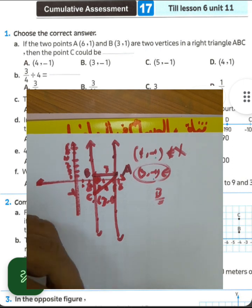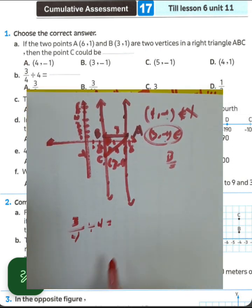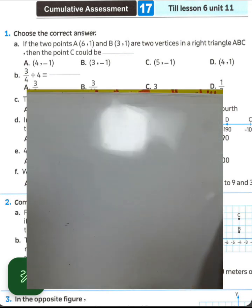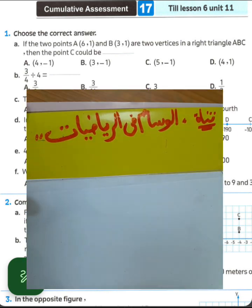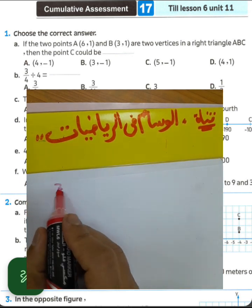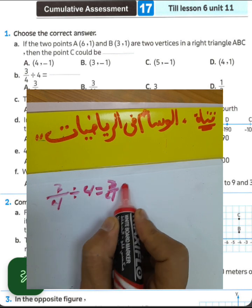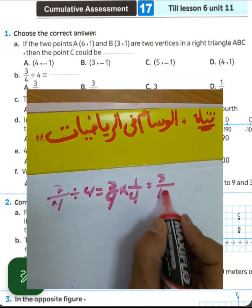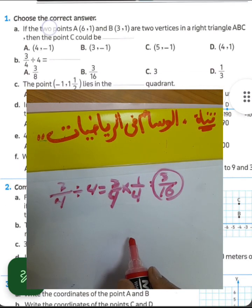Next, 3/4 divided by 4. Write 3/4, then multiply by the reciprocal of 4, which is 1/4. So 1 times 3 equals 3, and 4 times 4 equals 16. The result is 3/16, which is letter C.